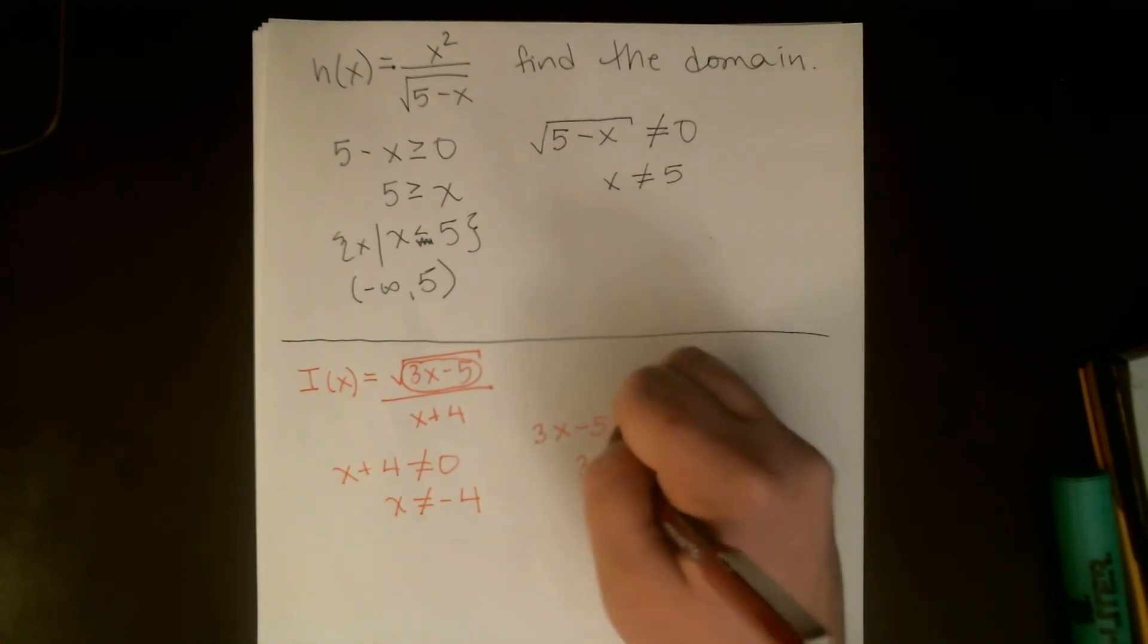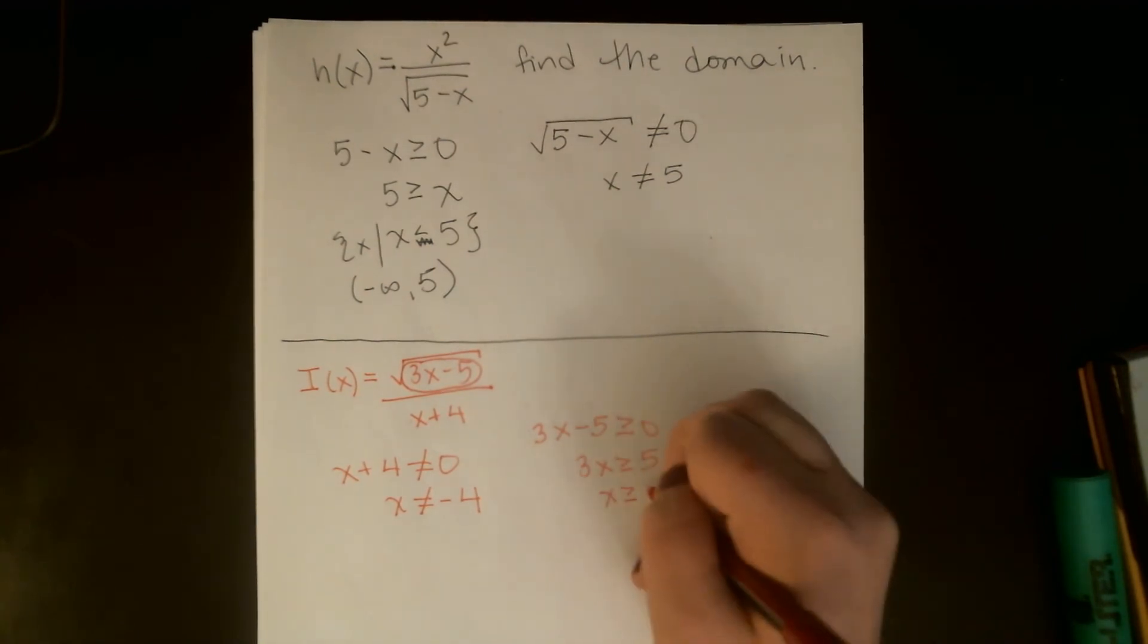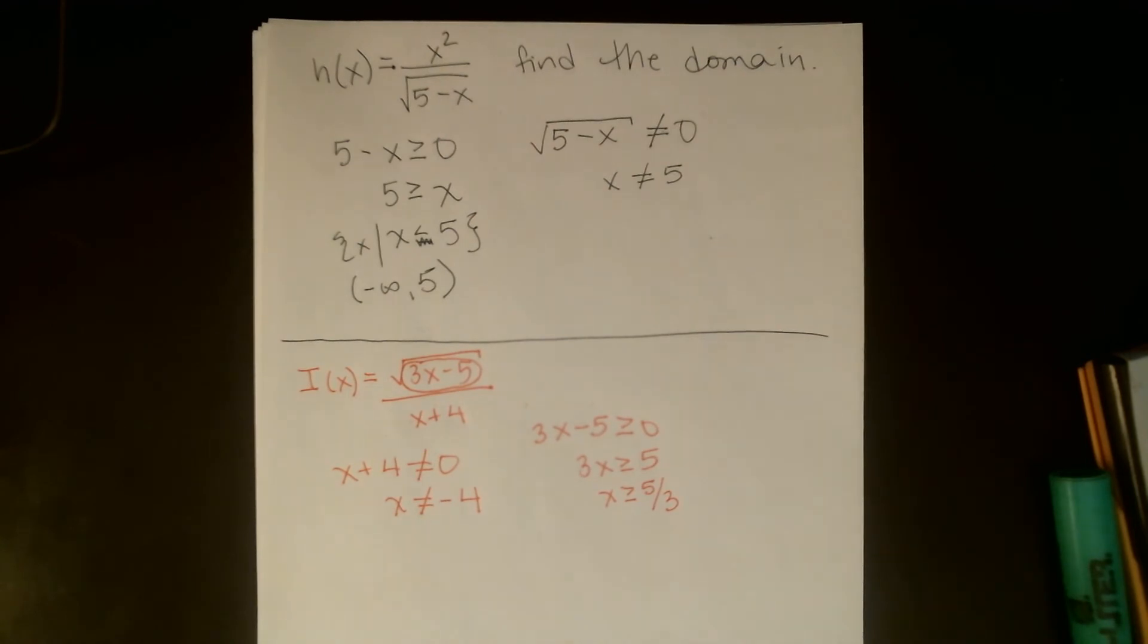We're back to a linear inequality, so we don't have to do any fancy graphing, although it would work perfectly well if you want to graph y equals 3x minus 5 and then figure out when your y values are positive. That would give you the right answer, but I would say the easy way on this one is just to solve. We're going to add 5 to both sides and divide by 3. Since 3 is positive, we don't have to worry about direction. Okay, so to make the division work, we have to be sure that our x is not 4. To make the square root work, we have to be sure that our x is greater than or equal to 5 thirds.